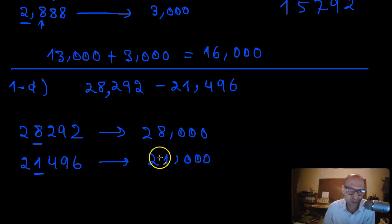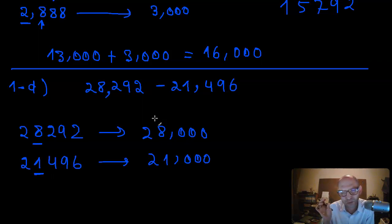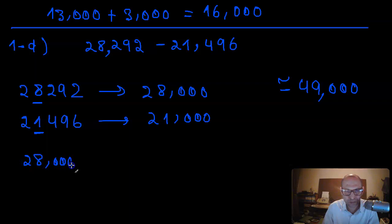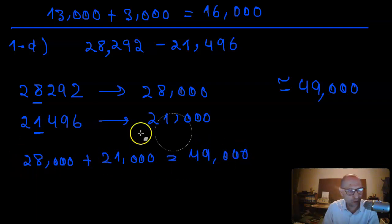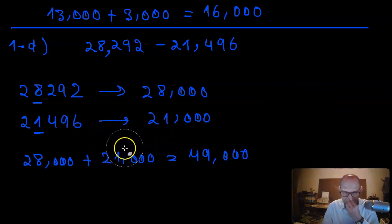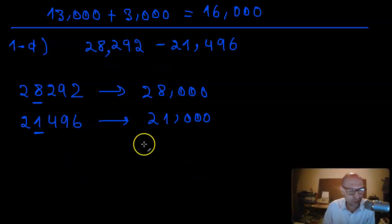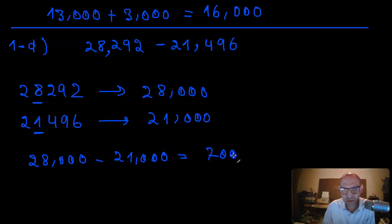The calculation is simple enough to do mentally: 28,000 minus 21,000 equals 7,000. That is the estimated difference. I made an earlier error saying addition — it's a difference, not a sum. So 28,000 minus 21,000 is 7,000.